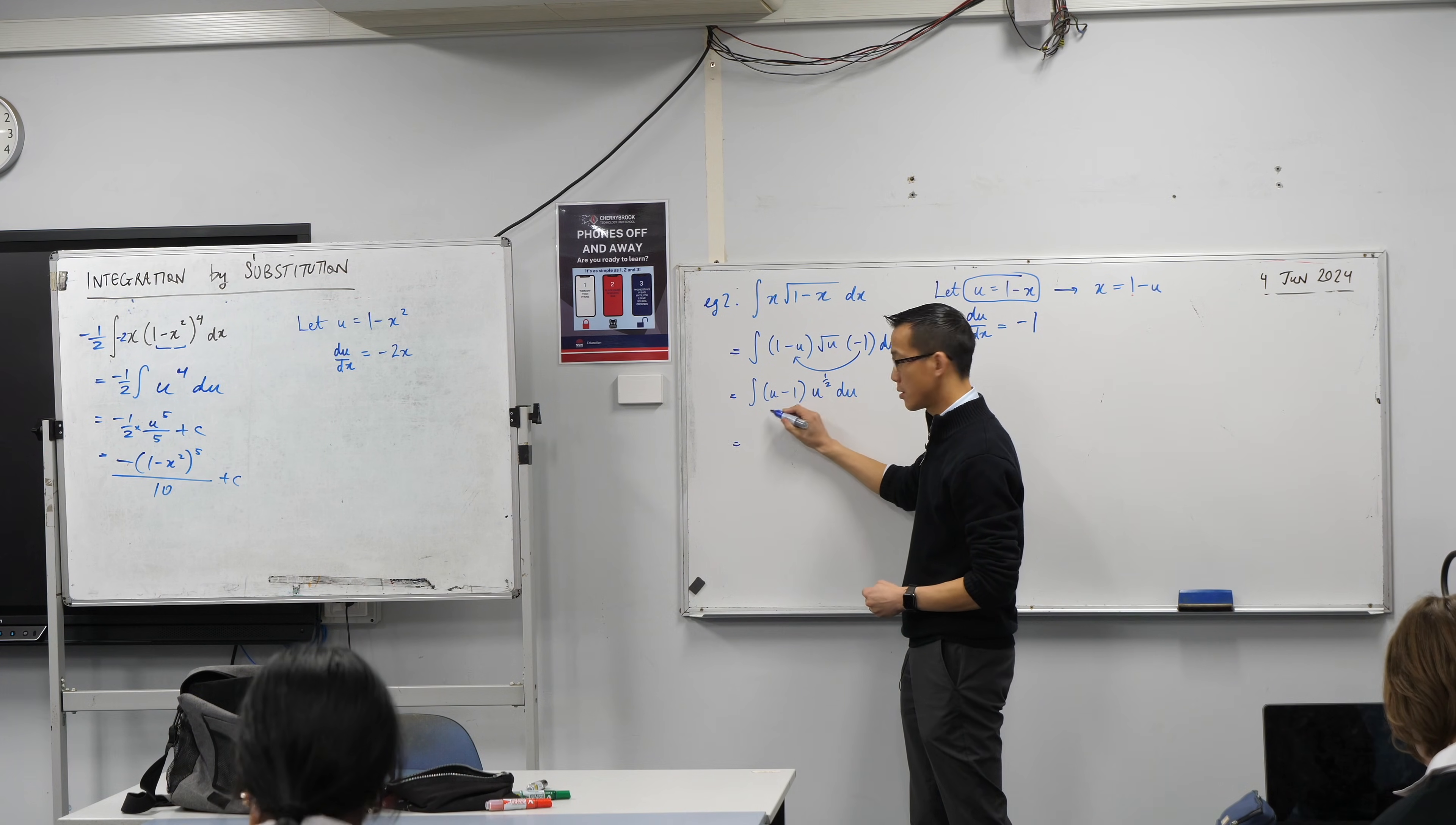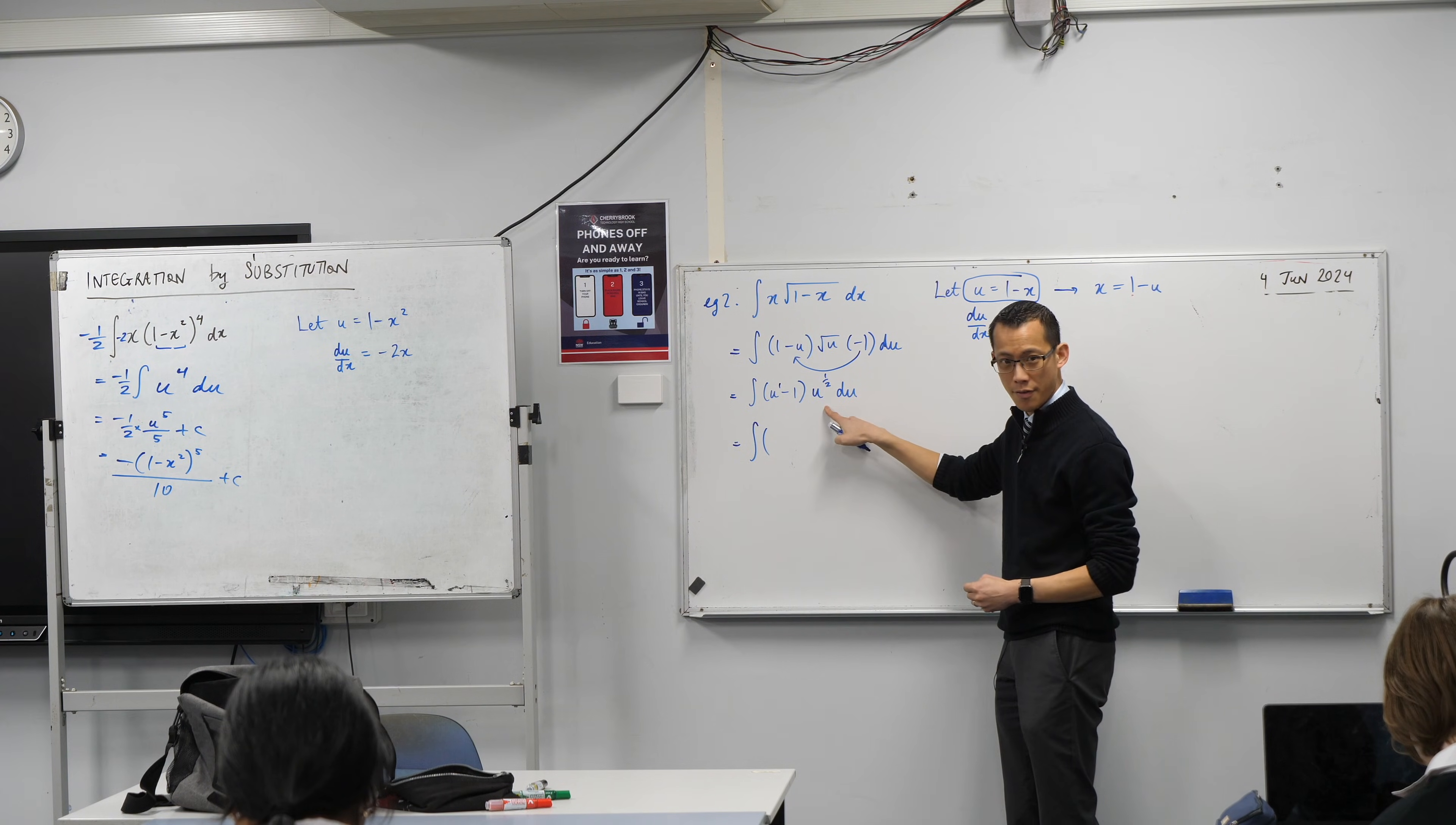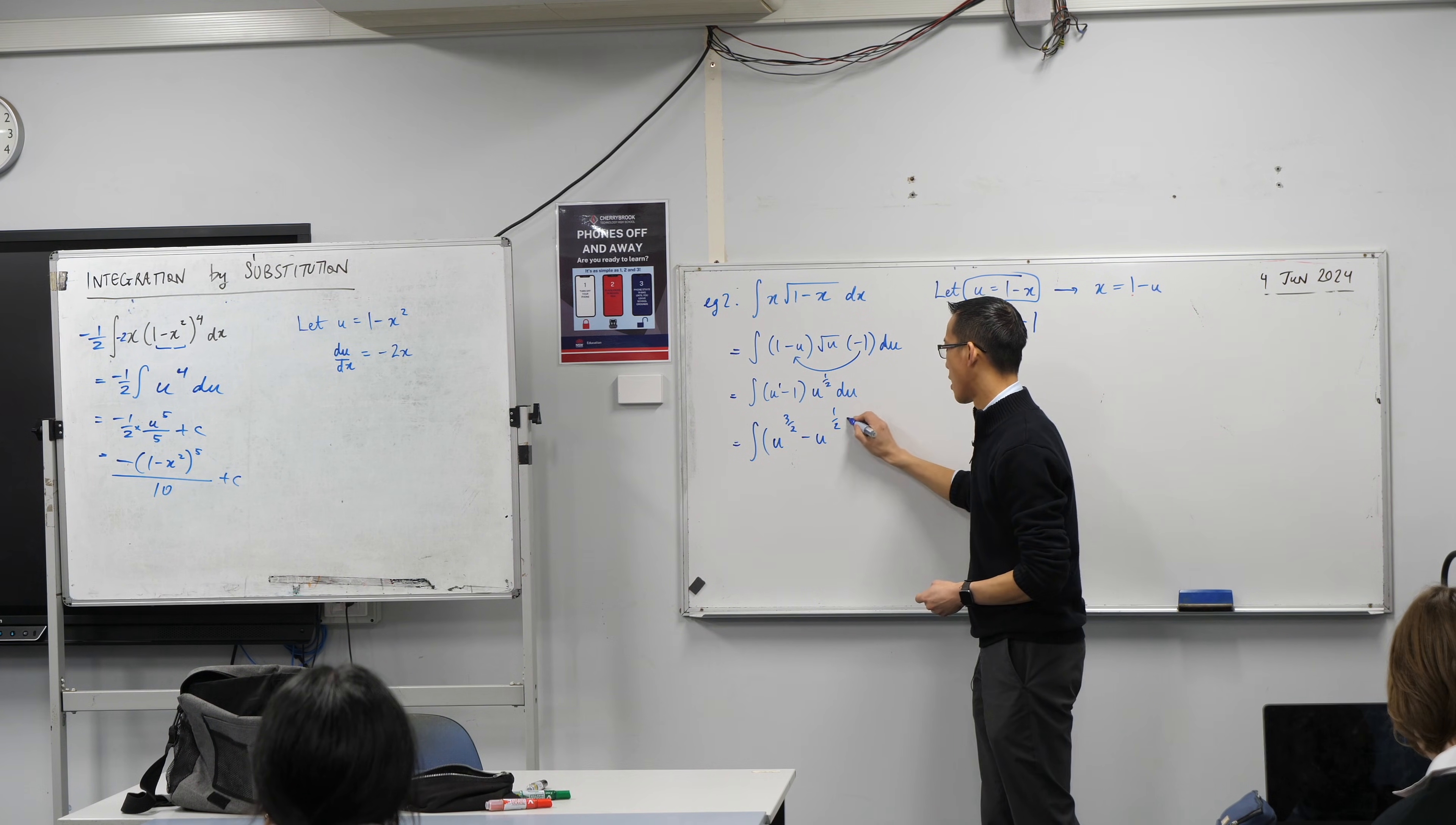And even though this looks so similar to what we started with, it's better because this can actually be expanded and expanded quite easily, actually. Remember your index laws. That's u to the power of 1 right there. So in my integrand, u to the power of 1 times u to the half, u to the power of 3 on 2. And then this is minus u to the power of 1 half.